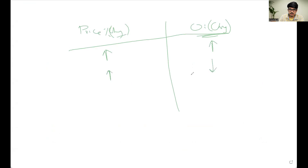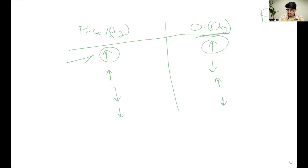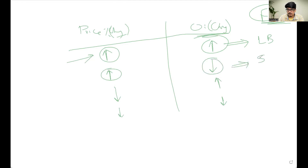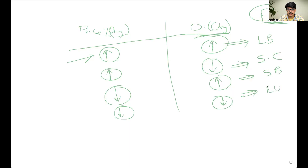When the price is increasing and open interest is increasing, that means long buildup is happening in the specific stock. When the price is increasing and open interest is decreasing, that means short covering is happening. When the price is decreasing and open interest is increasing, that means short buildup is happening. When the price is decreasing and open interest is decreasing, that means long unwinding is happening.